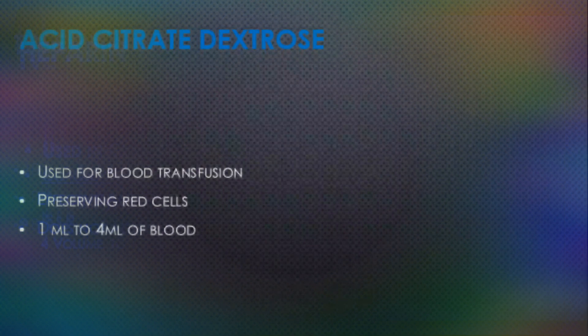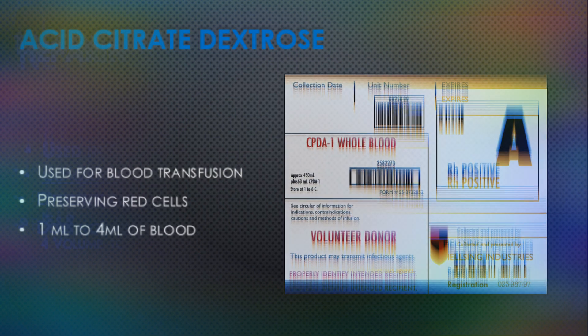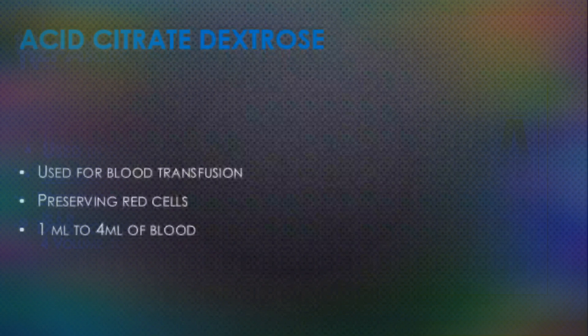Heparin is the best anticoagulant for the osmotic fragility test because red cell size remains intact. The fourth anticoagulant is acid citrate dextrose (ACD) or citrate phosphate dextrose adenine (CPDA-1), used primarily in blood banking. These are preferred for storage of blood for transfusion and for preserving red blood cells, and are already placed in blood bags. The recommended volume is 1 ml of ACD solution to prevent coagulation of approximately 4 ml of blood. They are also used for enzymatic studies of hemolytic processes.